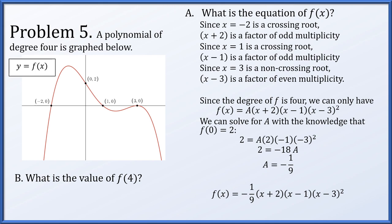Part b: compute f(4). Since we found the formula in part a, we just plug in x = 4: (-1/9) · 6 · 3 · 1² = -2.